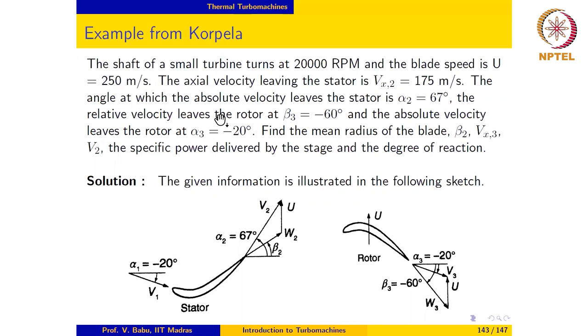The next example reads like this: the shaft of a small turbine turns at 20,000 RPM and the blade speed is 250 meters per second. The axial velocity leaving the stator is Vx2 equal to 175 meters per second. The angle at which the absolute velocity leaves the stator is alpha2 equal to 67 degrees, and the relative velocity leaves the rotor at beta3 equal to minus 60 degrees, and the absolute velocity leaves the rotor at alpha3 equal to minus 20 degrees.